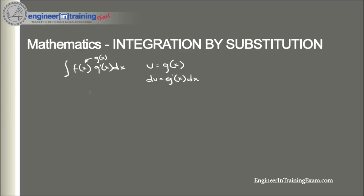So, when we substitute this back into the integral, we get the integral of f(u) du, which is equal to big F(u), which is equal to big F(g(x)), where F is the antiderivative of the function f.